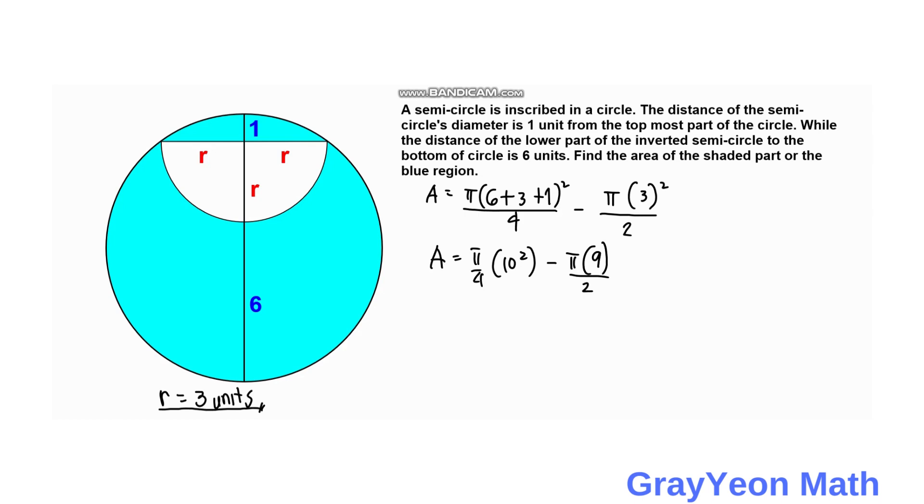And the area is equal to pi over 4 times 10 square minus pi times 9 all over 2. And since 10 square is 100, we can divide this by 2, which becomes 50. So area is equal to pi over 2 times 50 minus 9.